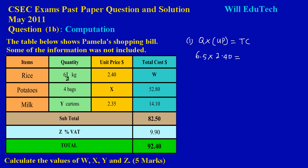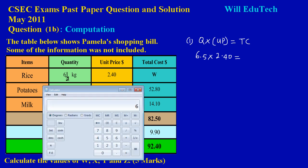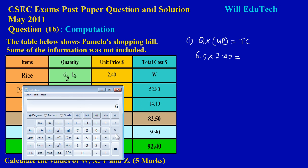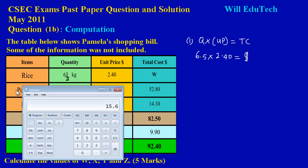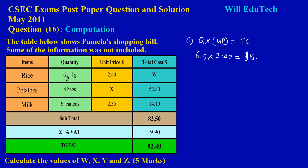We can pull up our calculator quickly because we were told we could use it. We have 2.4 or $2.40, multiply by 6.5, and that would give us $15.60. So here we would have a total of $15.60.